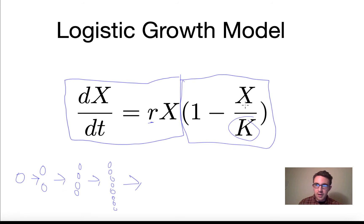so if we don't have any X, then the growth term is just 1 minus 0 times R times X. So it'll just be 1 times this growth term. But as we get more and more of X and X approaches the carrying capacity,